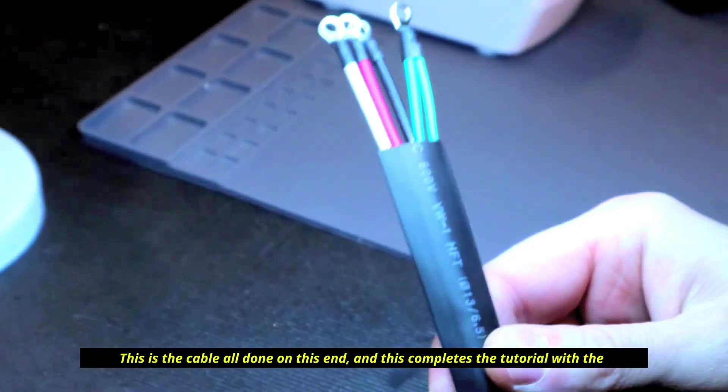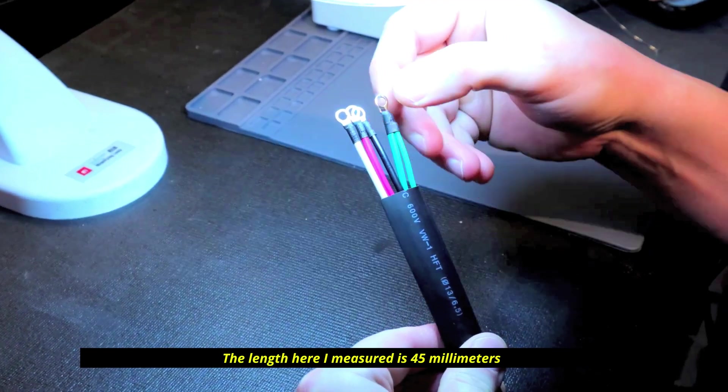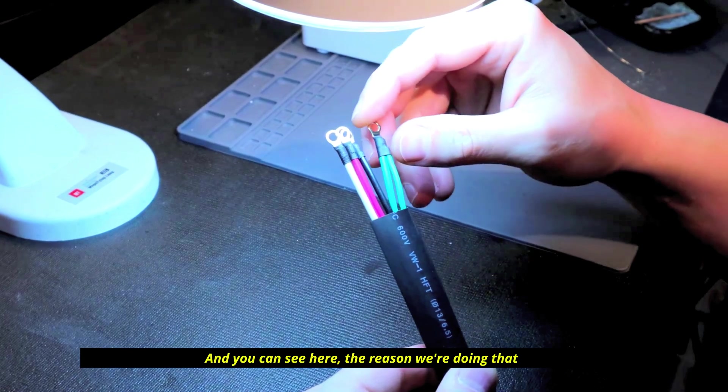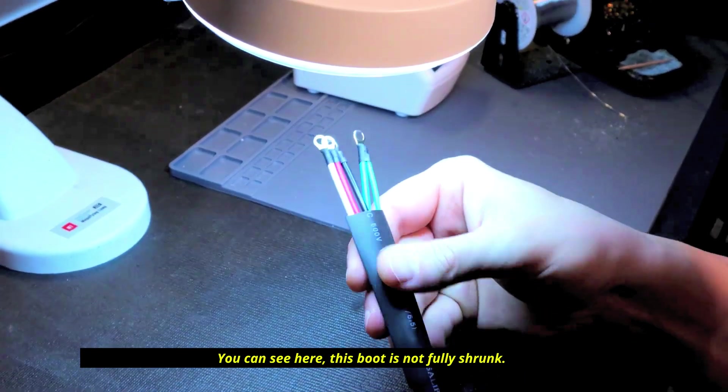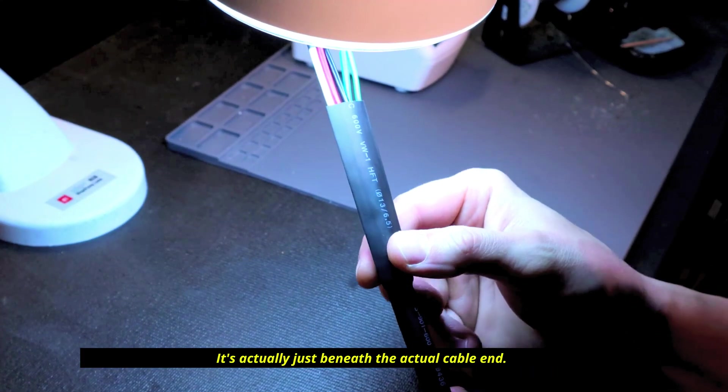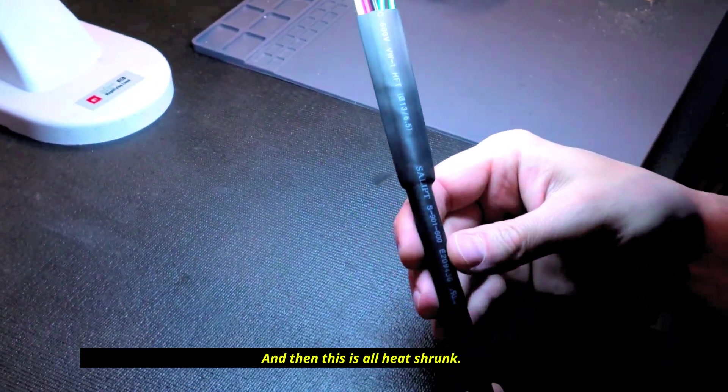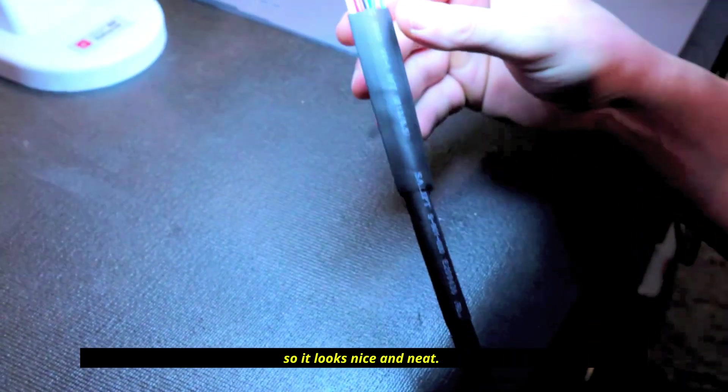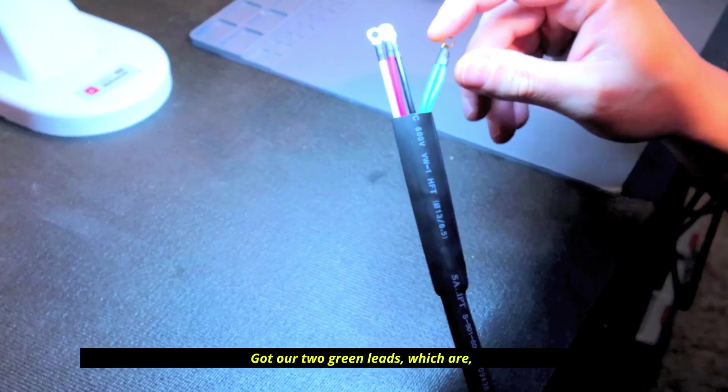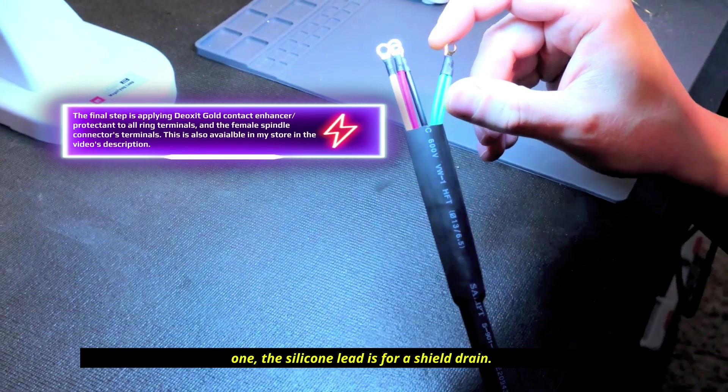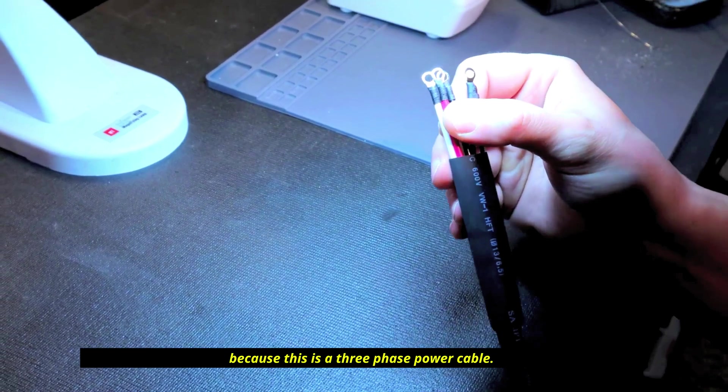This is the cable all done on this end and this completes the tutorial. You can see our ring connectors here. The length here I measured is 45 millimeters of actual lead exposed. The reason we're doing that is so we have a nice availability for flexibility for our client. You can see here this boot is not fully shrunk - it's actually just beneath the actual cable end and that makes it so this is flexible as well. Then this is all heat shrunk and we just try to keep everything nice and symmetrical so it looks nice and neat. You can see here how the cable came out. We've got our two green leads which - the silicone lead is for shield drain, the other green lead comes from the cable itself. These three are for power because this is a three-phase power cable.